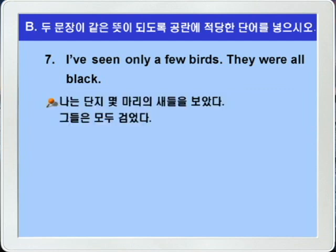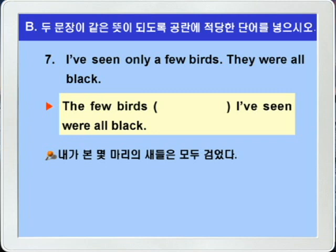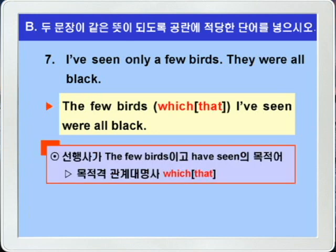7번입니다. 'I've seen only a few birds. They were all black.' 나는 단지 몇 마리의 새들을 보았다, 그들은 모두 검었다. 아래 문제를 보면 'The few birds blank I've seen were all black', 이렇게 되어 있는데 birds와 I 사이에 have seen의 목적에 해당되는 목적격 관계대명사를 쓰는 문제가 되겠습니다. 선행사가 birds, 즉 동물이고 have seen의 목적에 해당되니까 목적격 관계대명사 which나 that을 쓰면 되겠어요. 'The few birds which I've seen were all black.' 또는 'The few birds that I've seen were all black.'